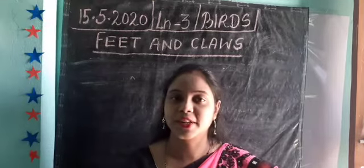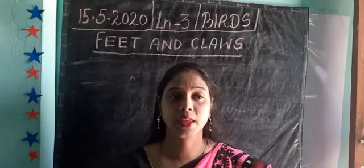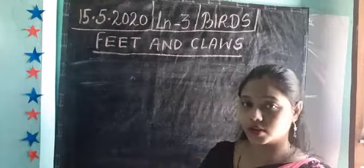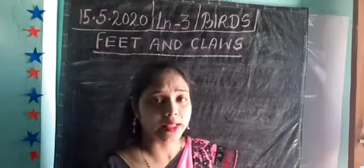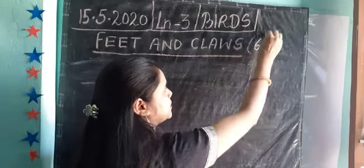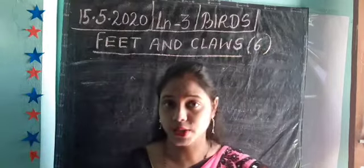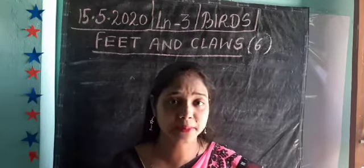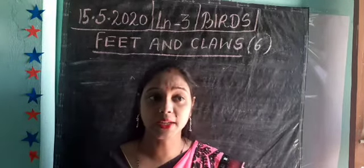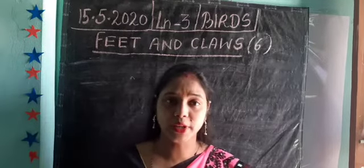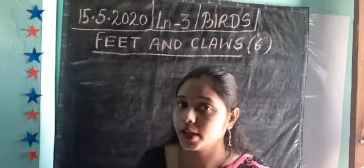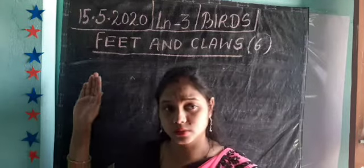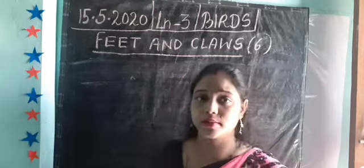I hope you have learned the different types of beaks. Now we are going to start feet and claws. Remember, according to the beak structure there are nine types of birds. Here we are going to study feet and claws, and depending on feet and claws there are six types of birds.